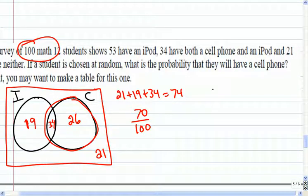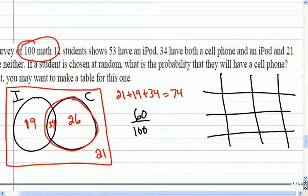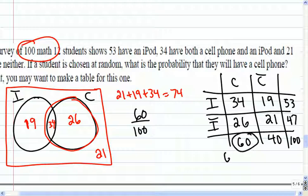If we did the table method, here's iPod, no iPod, cell phone, no cell phone. So it says 53 have iPods. There's 100 people here. And neither is this column, 21. And 34 have both. So I can start to add these up. That's going to give me 19. That means when I add these together, I get 40. So there's 60 here, which means 26 go there and 47 go there. So again, how many have a cell phone? 60 out of the 100 or 60% have a cell phone.